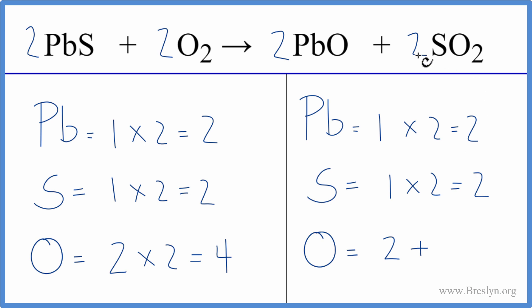Everything is balanced now except the oxygens. Let's change our coefficient here to three, and we can update these numbers here because now we have two times three—that gives us six. And now we've balanced the equation.